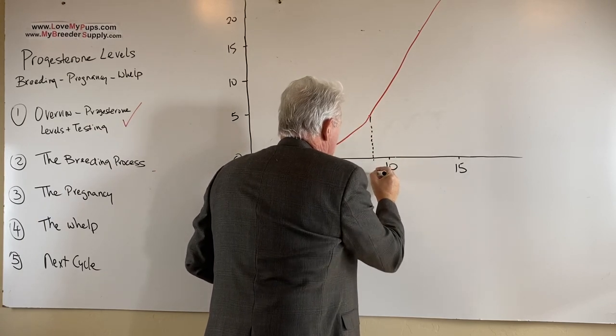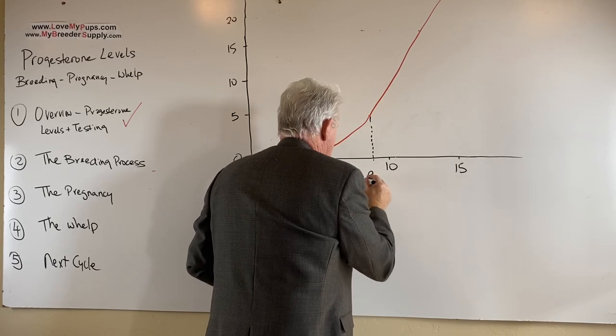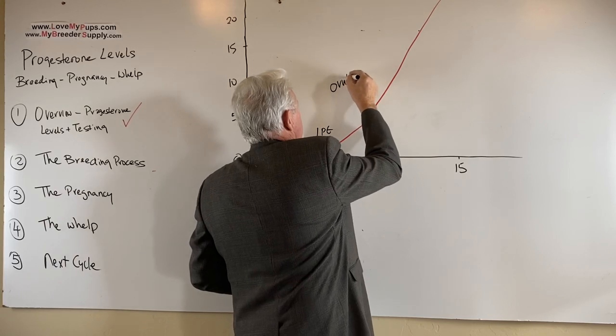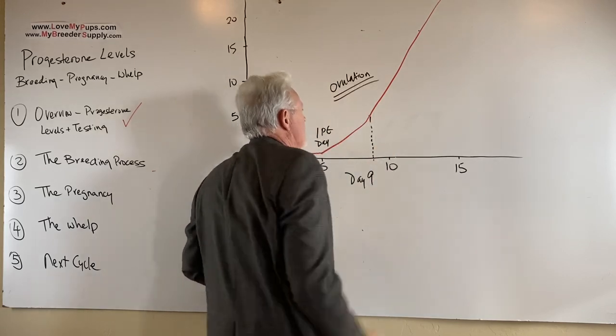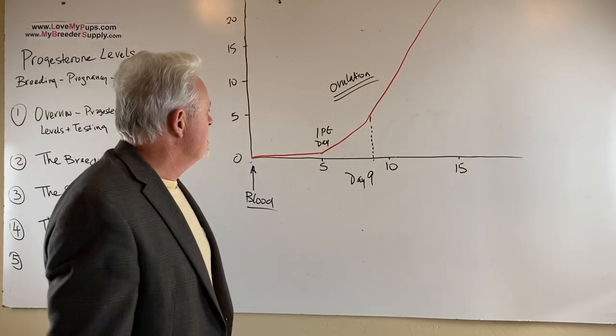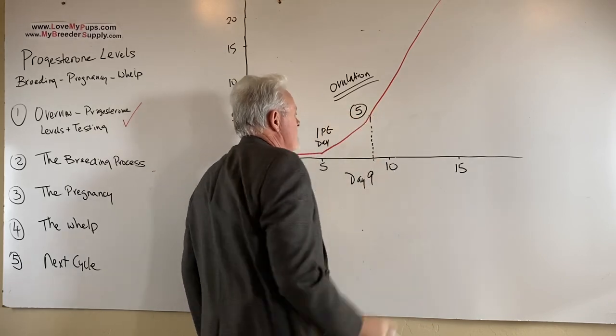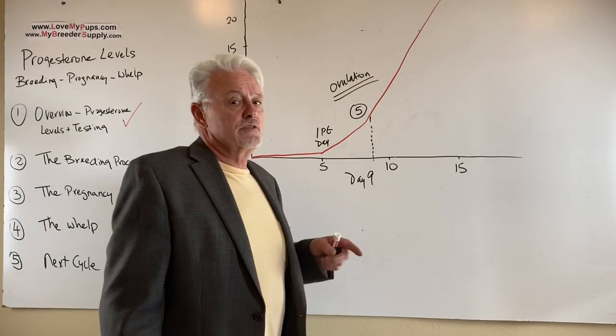So that's going to be about here, and that typically is about day nine, about day nine, that we would expect this dog to be ovulating. This is ovulation, and this is an important point for us, because we would like to try to pinpoint that. So ovulation at a progesterone level of five, we're trying to find that point, because typically we're breeding a dog two days after that.